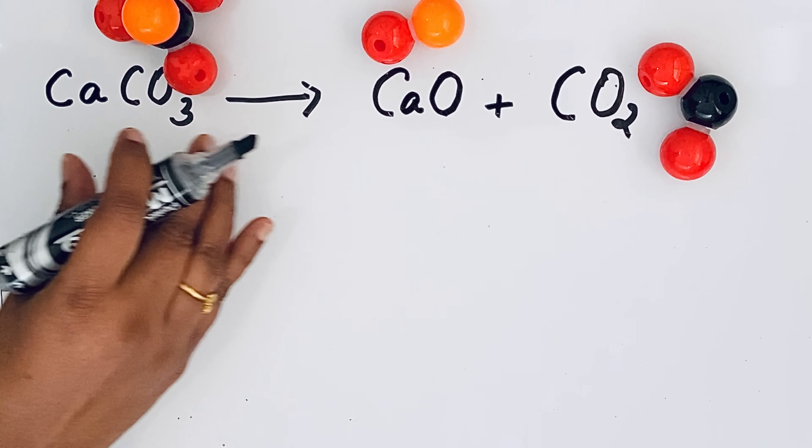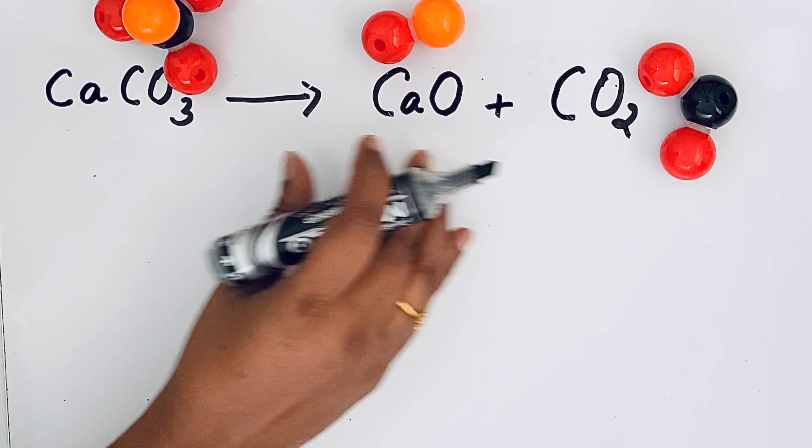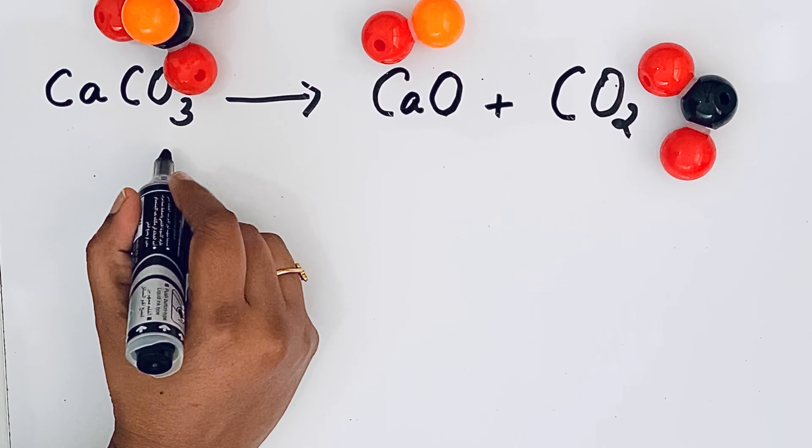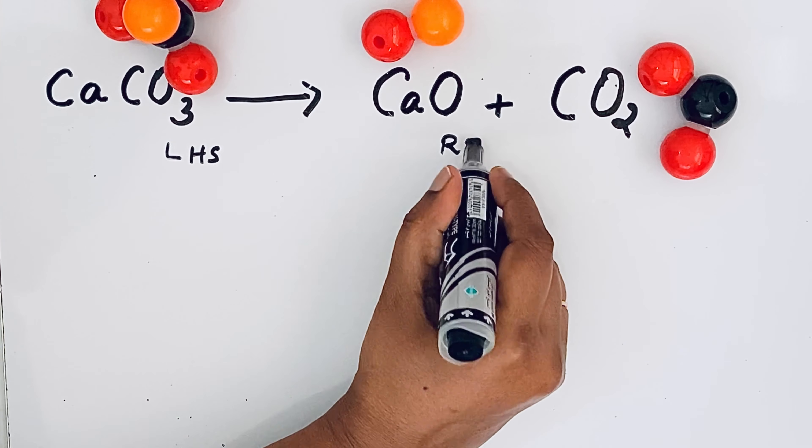So according to law of conservation of mass this should be equal to product side. So to balance the equation first let us split it like left hand side and right hand side.